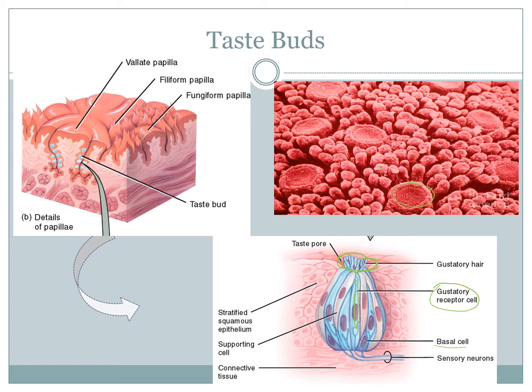Your basal cells are specialized stem cells in the background, because you burn through a lot of your taste buds. You can scrape your fingernail over the top of your tongue, removing a bunch of gustatory hairs — but within seven to ten days your basal cells will become gustatory receptor cells and the whole thing replaces. It happens every week. Your taste buds themselves do not have any memory whatsoever.